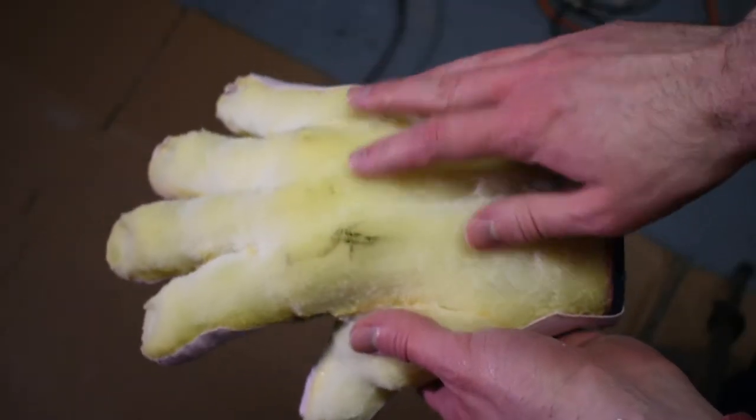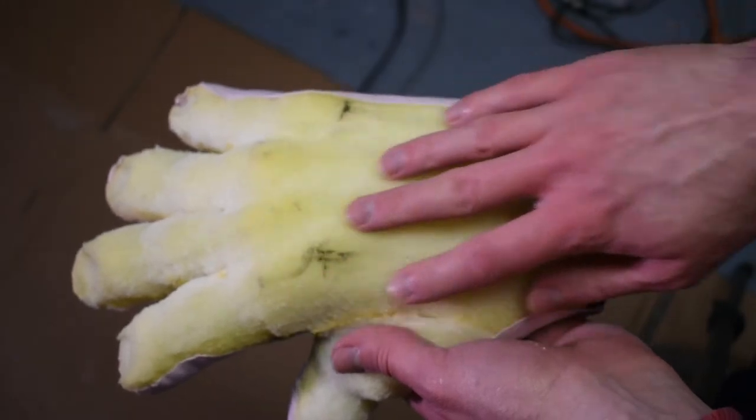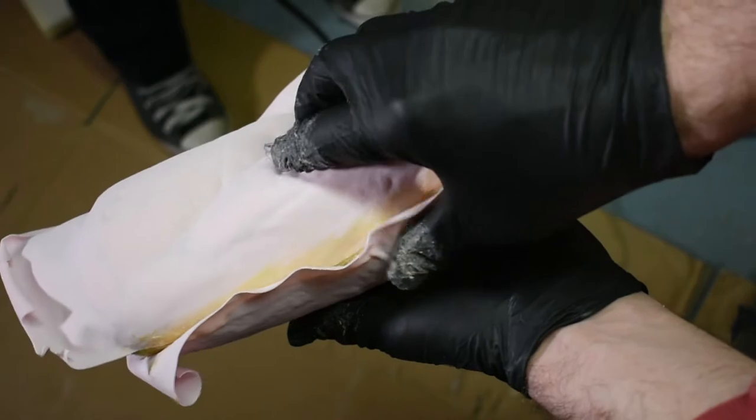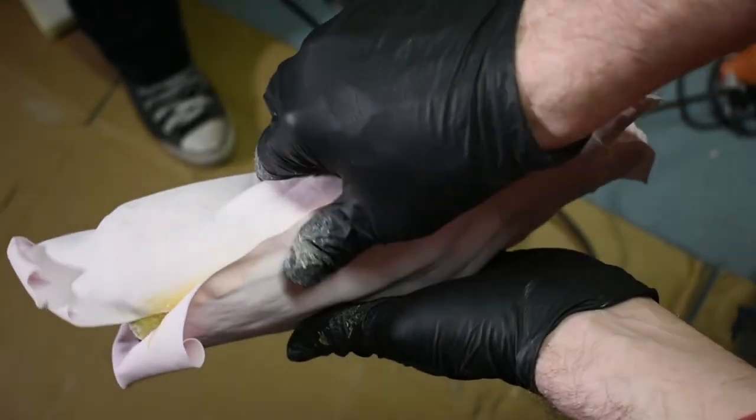Now I'm going to spray the back of the hands with glue and then put a piece of fabric over it like I did with the palm. All right, the fabric's glued on the top. Now I'm going to go around and glue down the edges before trimming off the excess.